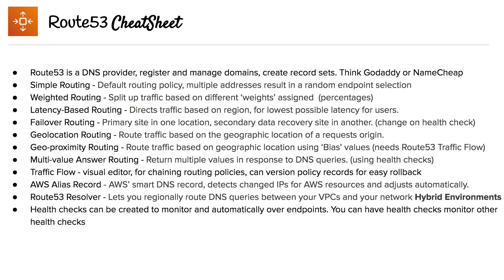Latency-based routing routes traffic based on region for the lowest possible latency for users — so it's not necessarily the closest geolocation, but the lowest latency. Then we have failover routing, which uses a health check where you set a primary and a secondary, and it will fail over to the secondary if the primary health check fails.